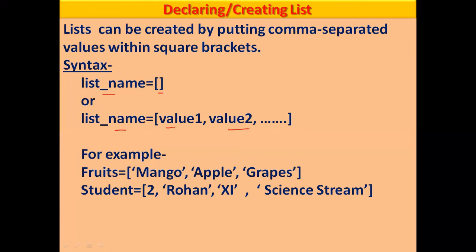For example, you have a fruit list with elements mango, apple, grapes — separated by commas, with string values in single or double quotes. A second example is a student list with multiple data types: role number, student name, art class, and science team.